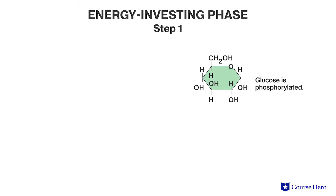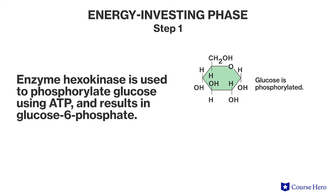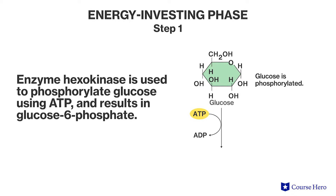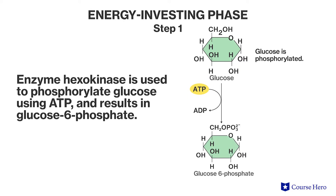The first half of glycolysis, the energy-investing phase, involves the following five steps. Step one: the enzyme hexokinase is used to phosphorylate glucose using ATP. This reaction results in glucose 6-phosphate.